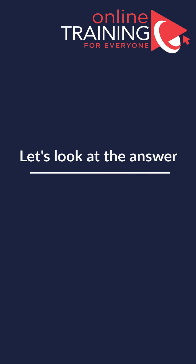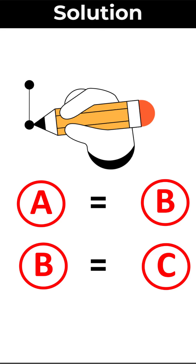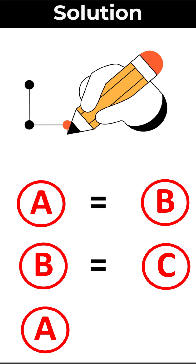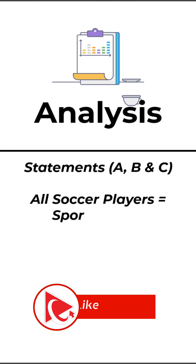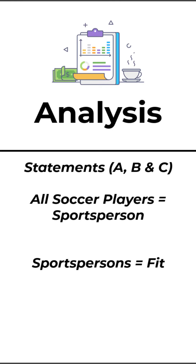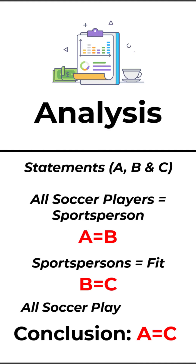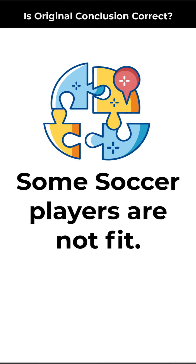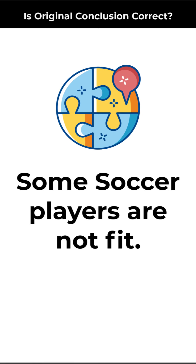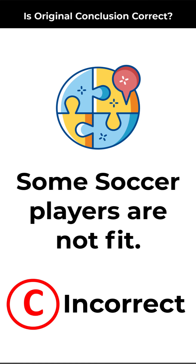As you might be well aware, in a logical world there is a formula: if A equals B and B equals C, then you can reasonably conclude that A equals C. Looking at our original statements: 'all soccer players are sportspersons' is equivalent to A equals B, and 'all sportspersons are fit' is B equals C. Therefore A equals C, meaning all soccer players are fit. The conclusion that some soccer players are not fit is incorrect. The correct choice is choice C: incorrect.